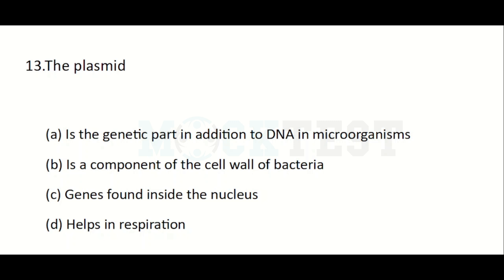The plasmid: Option A: is the genetic part in addition to DNA in microorganisms. Option B: is a component of the cell wall of bacteria. Option C: genes found inside the nucleus. Option D: helps in respiration. The answer is Option A: the plasmid is the genetic part in addition to DNA in microorganisms.